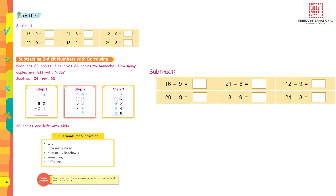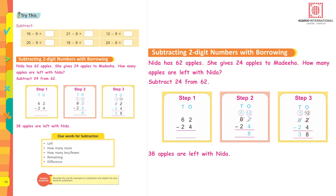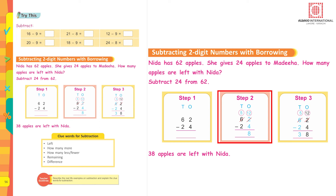Try to subtract these numbers yourself. Subtracting two-digit numbers with borrowing. Nida has 62 apples; she gives 24 apples to Madiha. How many apples are left with Nida? Subtract 24 from 62. Write the biggest number at the top: 62 and 24. There are 2 ones and 4 ones.